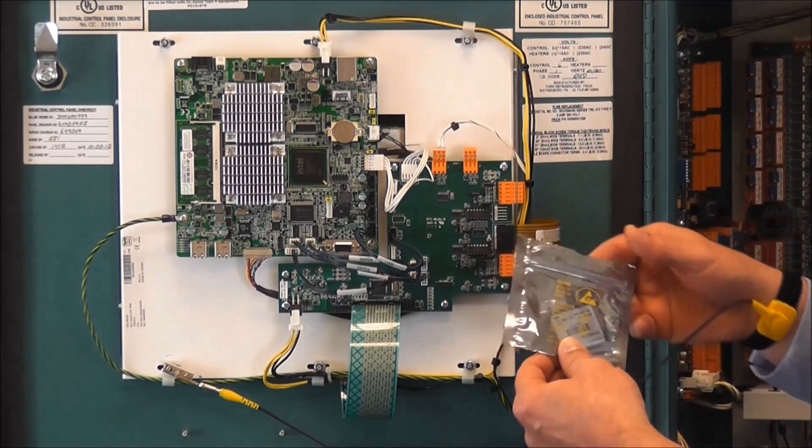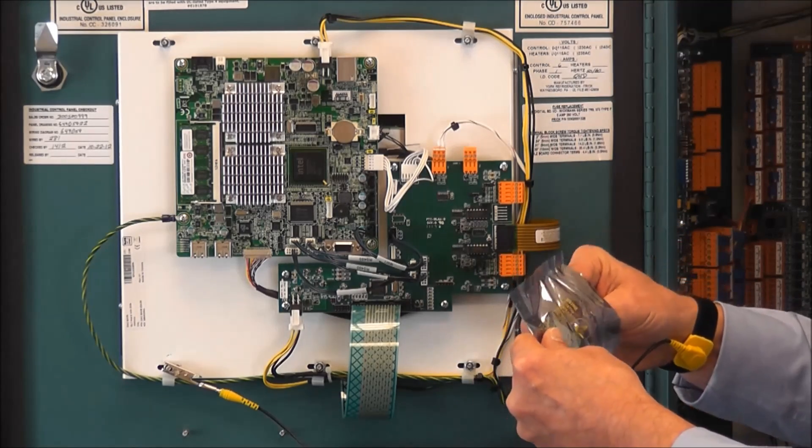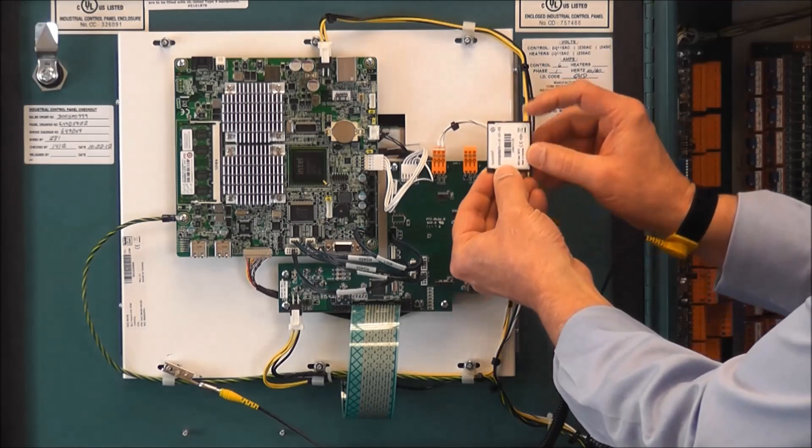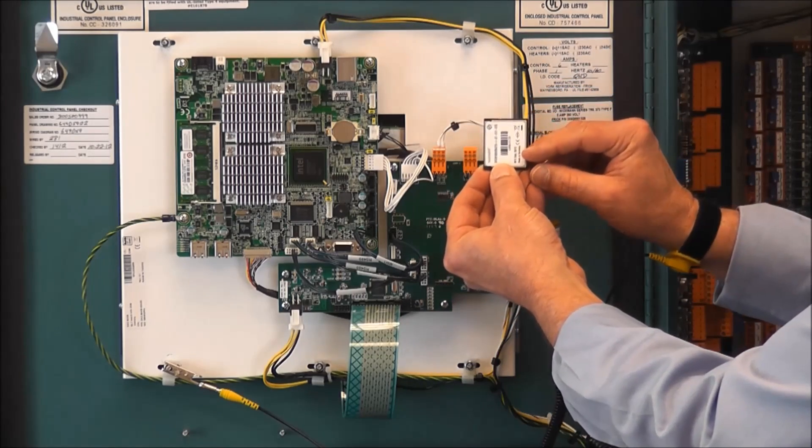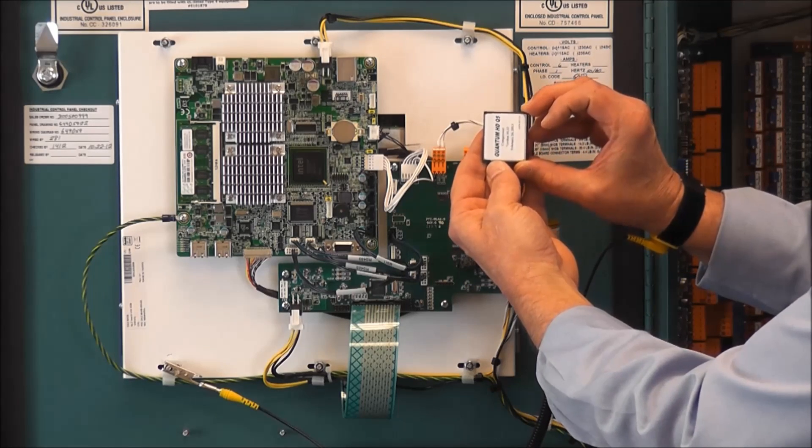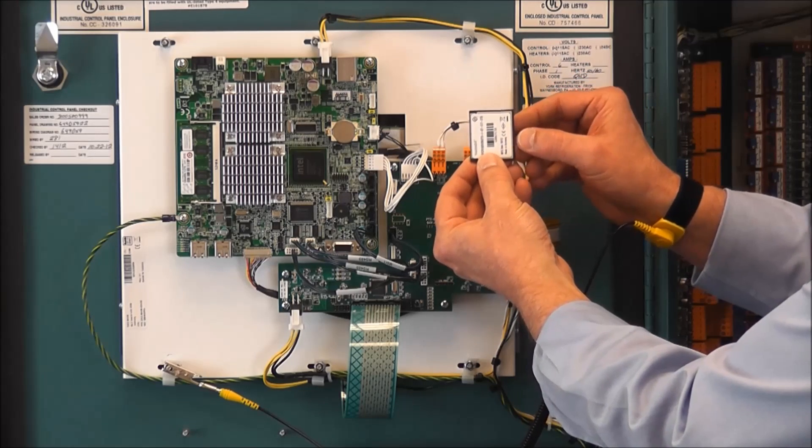The next step will be to take the card that we received in an anti-static bag, remove that card, and we want to install the card with the manufacturer's information facing outward. On the flip side is the Quantum HD Q5 label. But again, with the manufacturing data facing outward is the proper position.